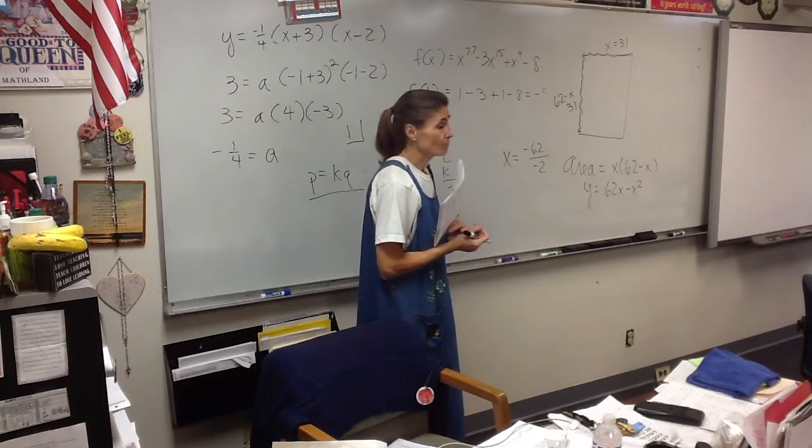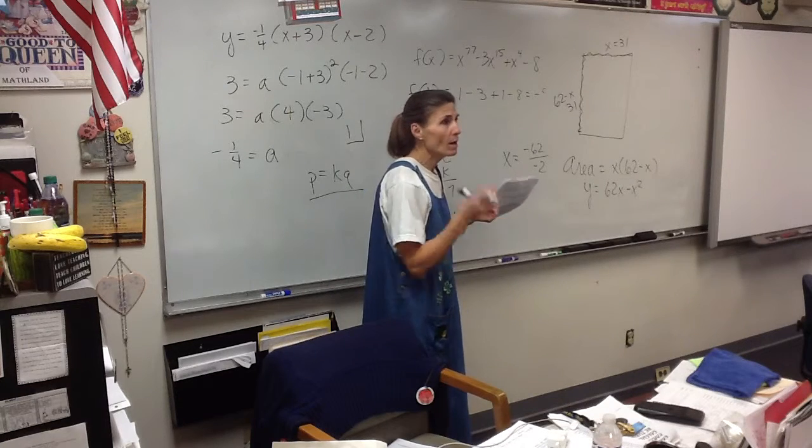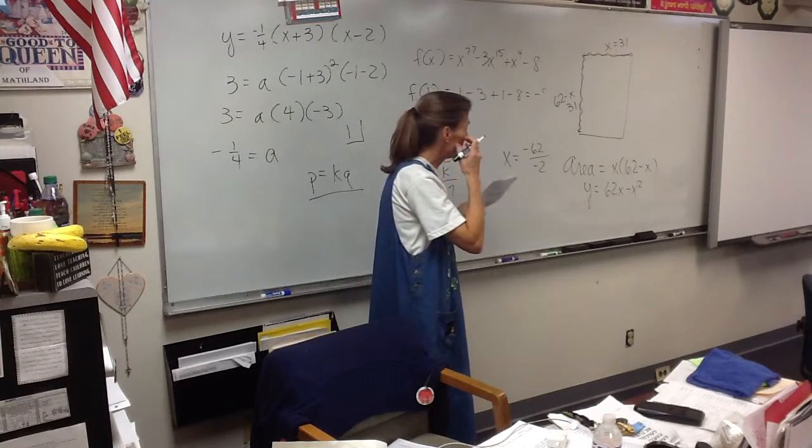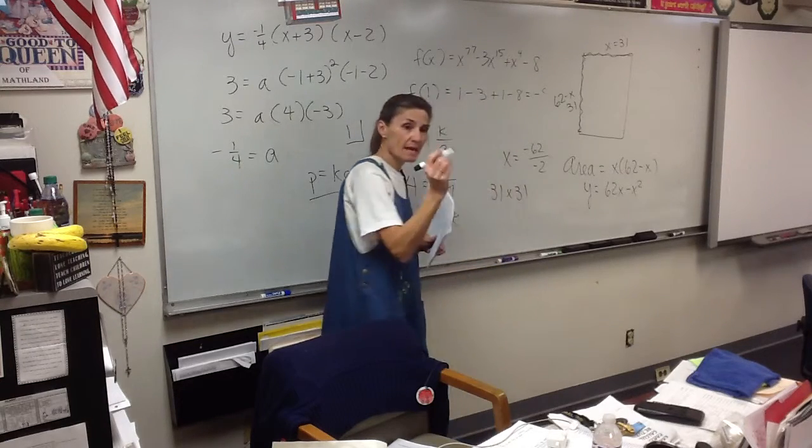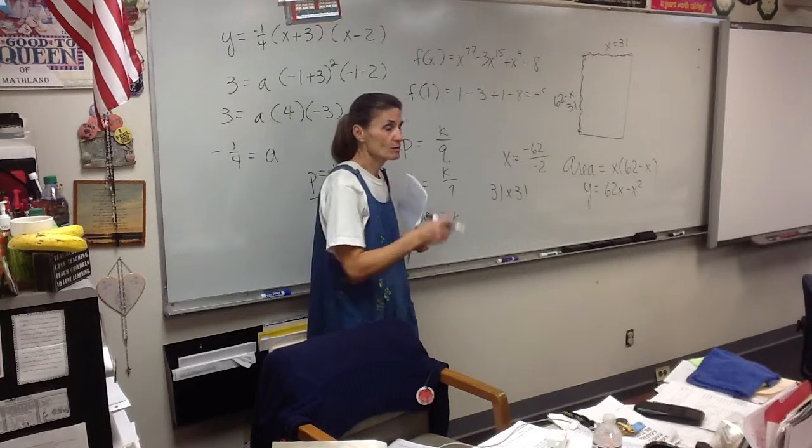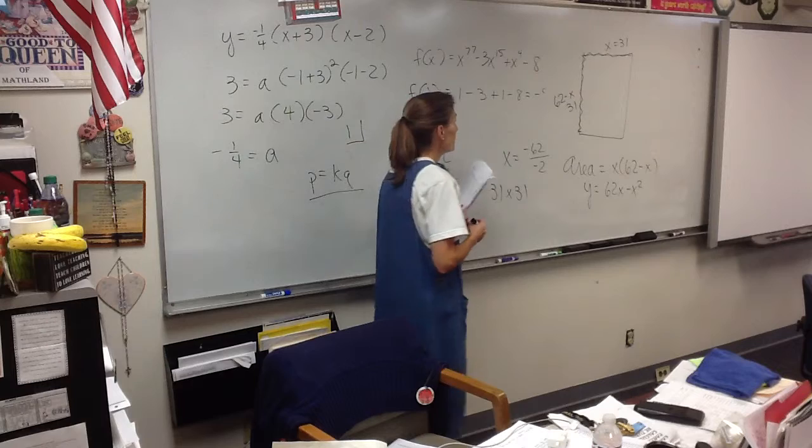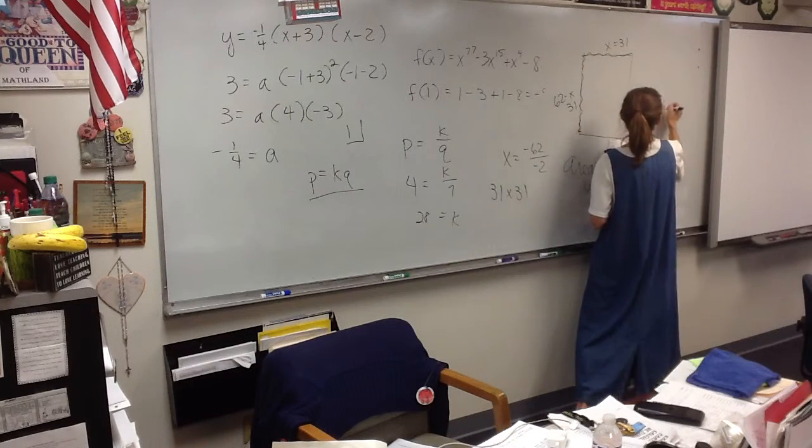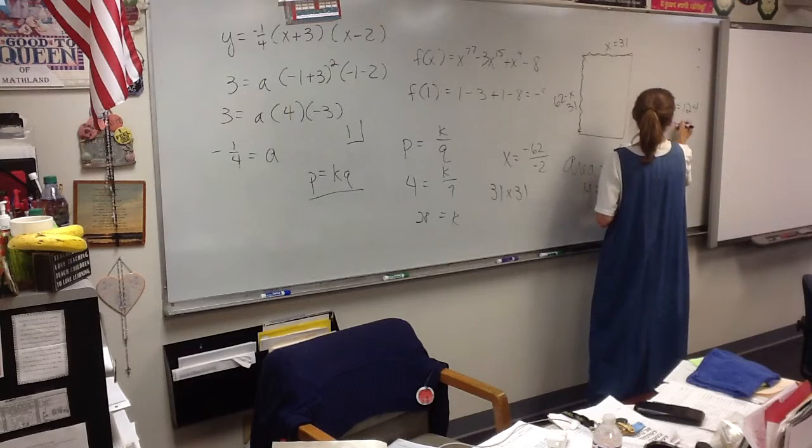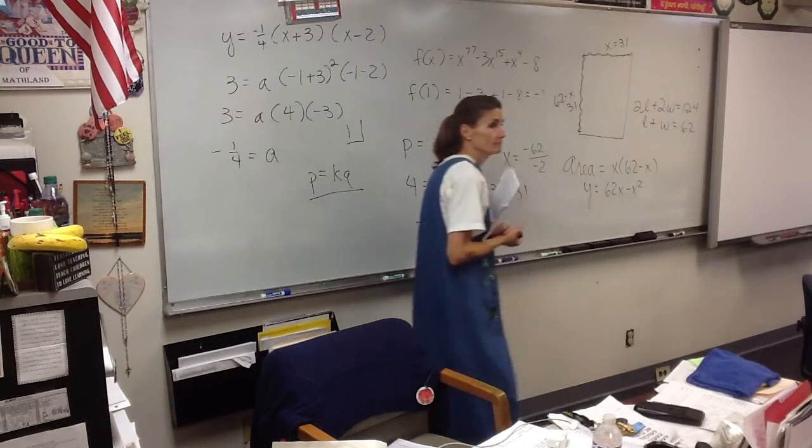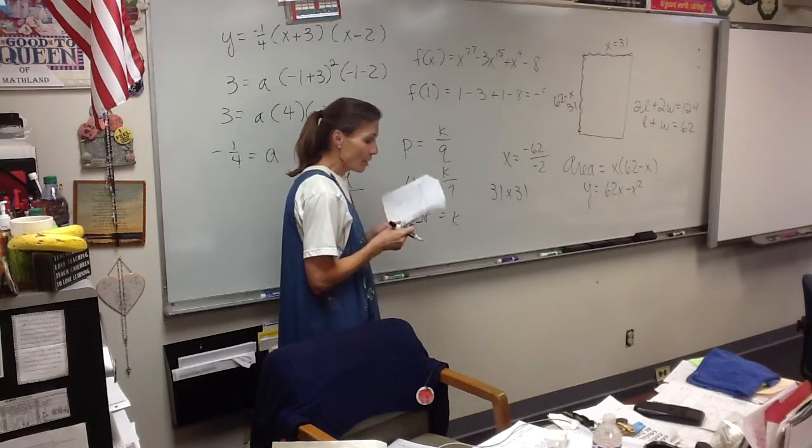And what did we want to know about that? Maximum. So we'll find our vertex, negative b over 2a. So that works out to be 31, and so does this one. So the question said find the dimensions, it's 31 by 31. How did you actually get 62 then? Two lengths and two widths are 124, so what's one length and one width?